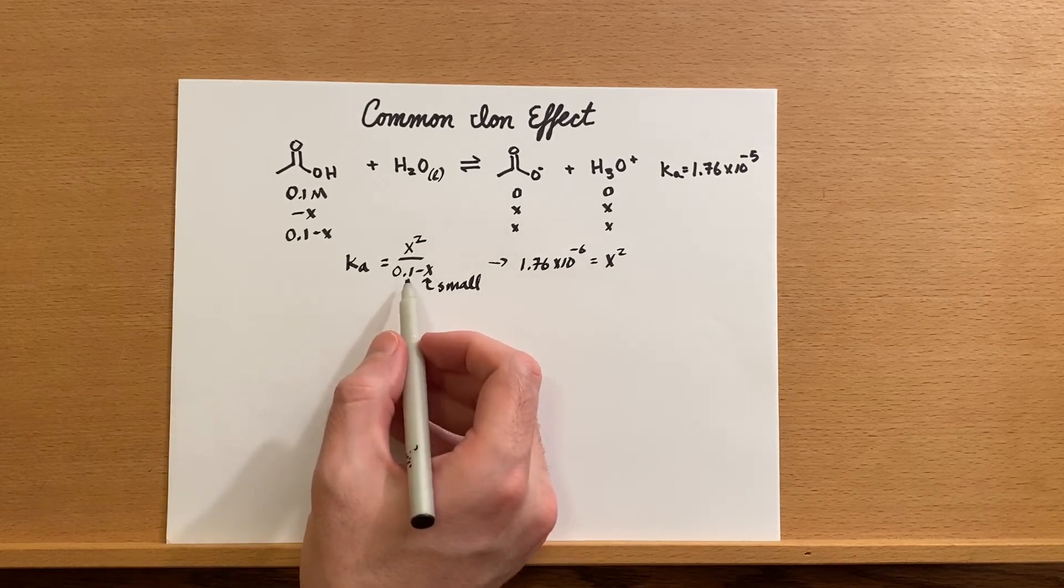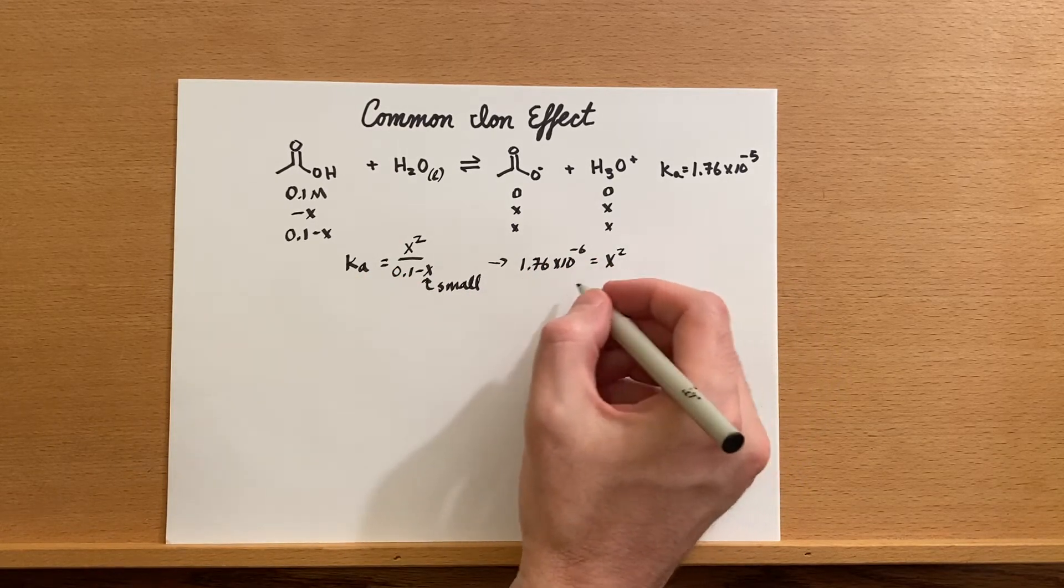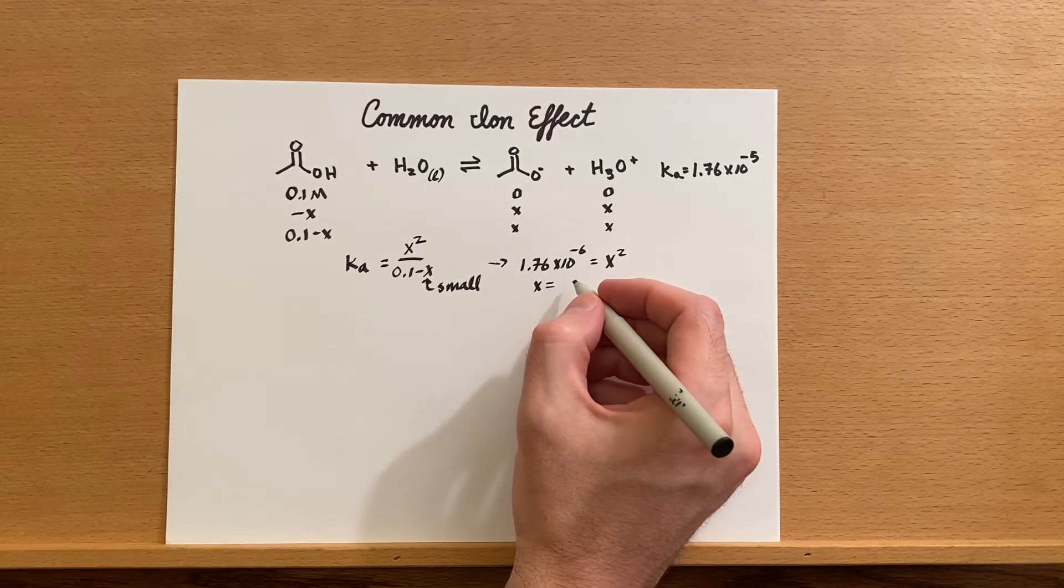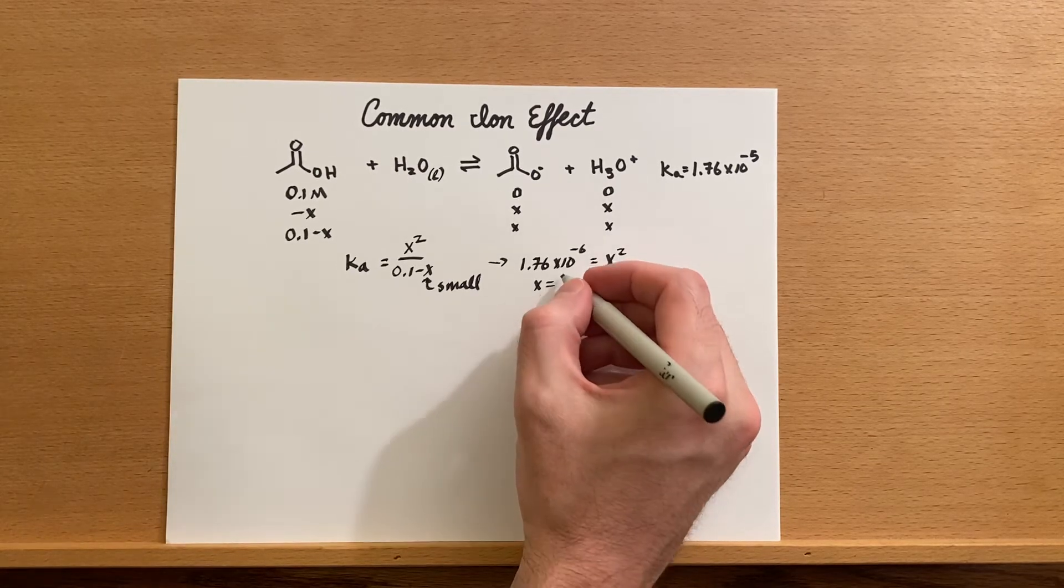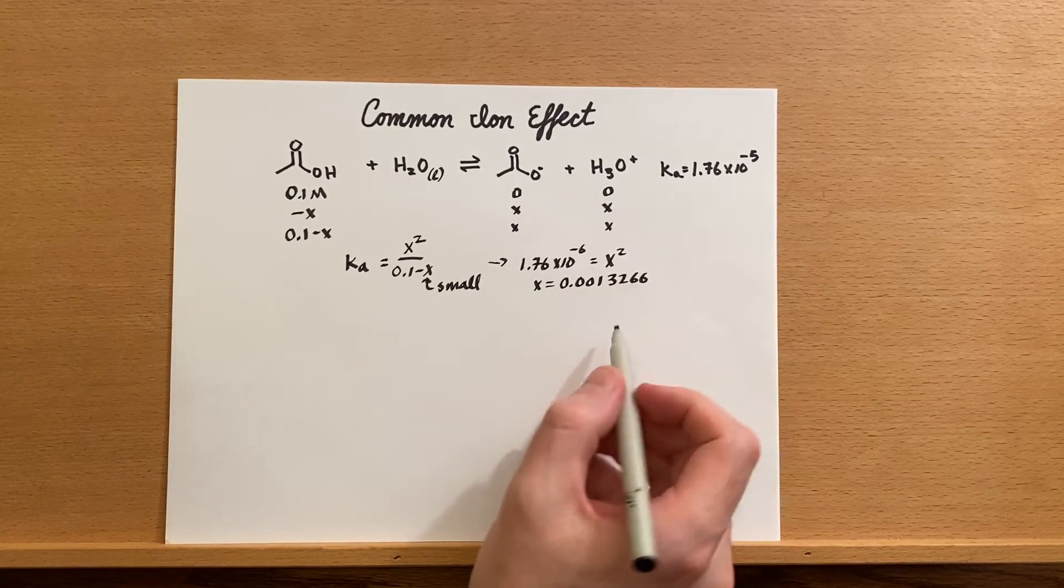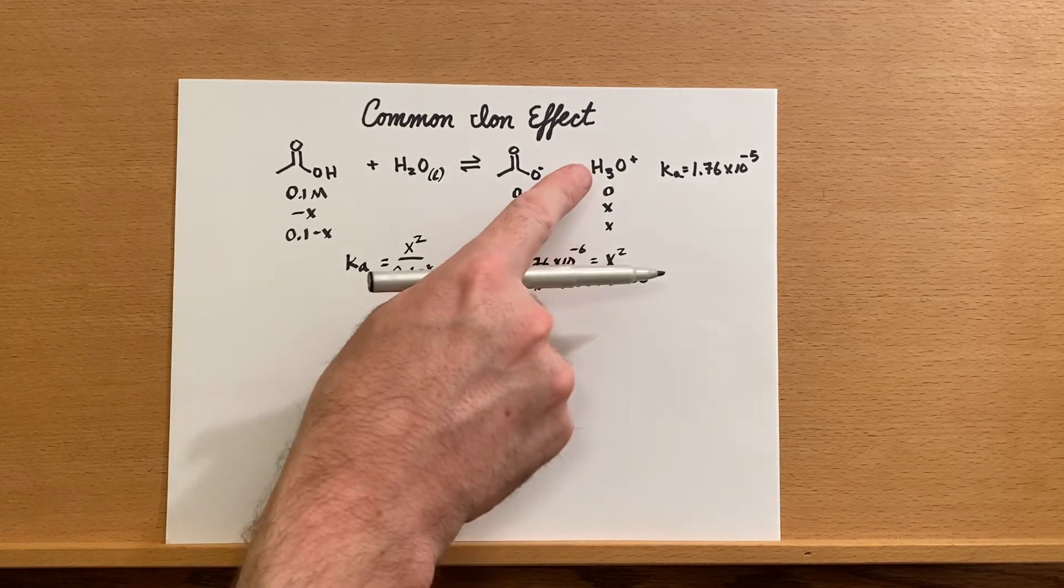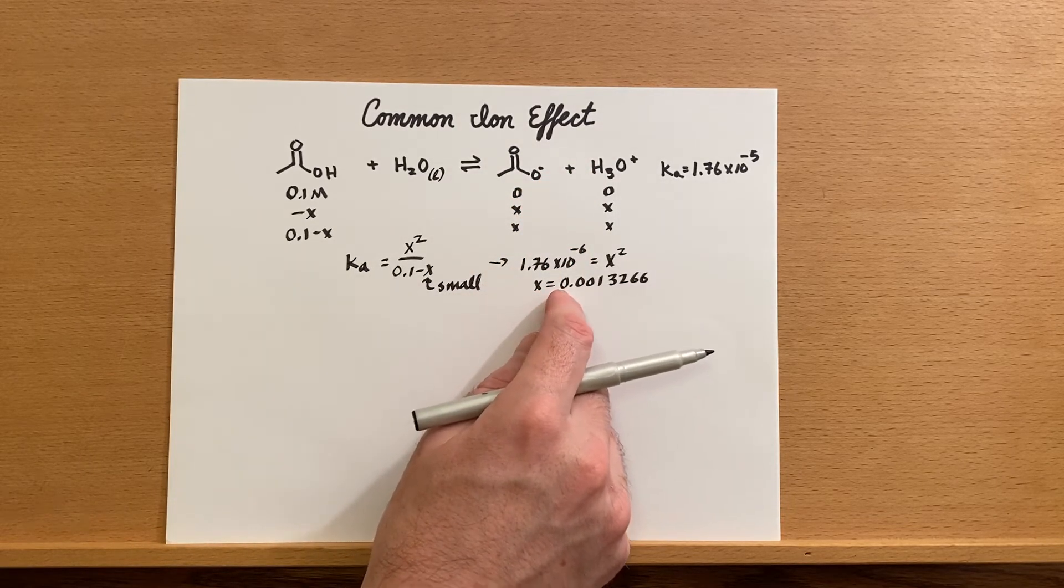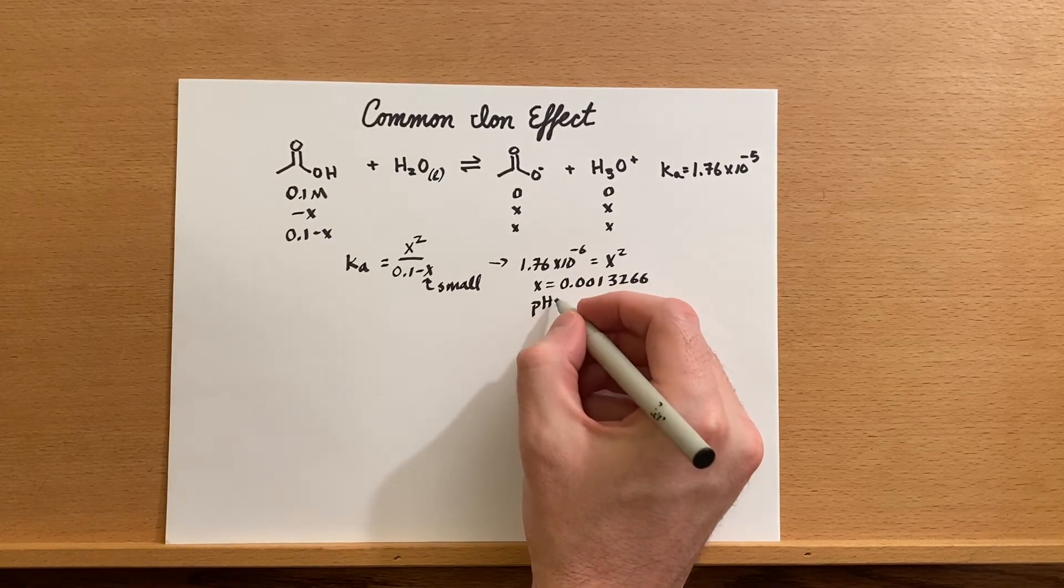If we simply plug in our Ka and multiply 0.1 by both sides we should get this, and if we take the square root we'll get X equal to 0.001326. Since we had a weak acid in the beginning, this X is the concentration of H+, so we can simply take the negative log of this if we want to know the pH. In that case, pH would equal 2.88.